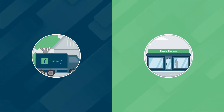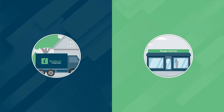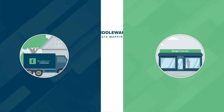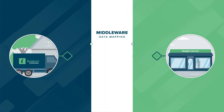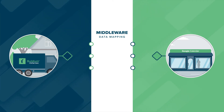Since they're unique, we'll call Google's system the shop and Google's API the shopkeeper. In the middle, you need middleware, which helps map the fields and data between the two systems. You can build your own middleware or leverage easy-to-use solutions.